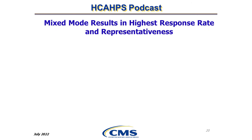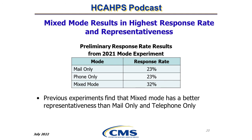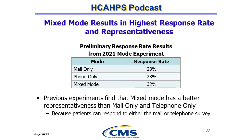Recent preliminary results from the 2021 mode experiment show that mixed mode survey administration still performs the best. The preliminary response rate achieved by mail-only and phone-only was 23% each, while mixed mode achieved a response rate of 32%. Mixed mode, which includes a mail survey with phone follow-up, has better representativeness than mail-only and phone-only. Because the mixed mode allows patients to select mail or phone, it shares the advantage of the higher performing mode with respect to age, service line, race, and ethnicity.